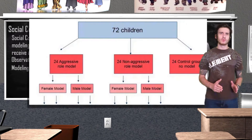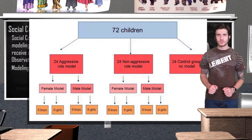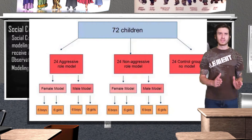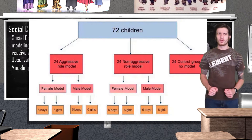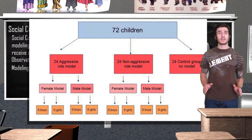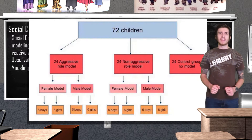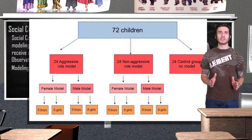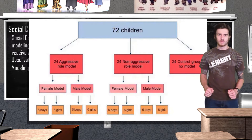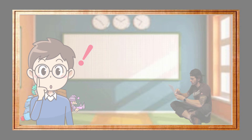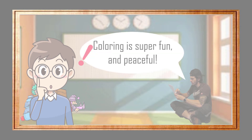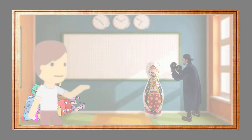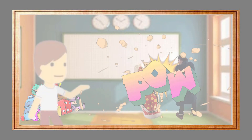The sample used for the study was 36 boys and 36 girls from the Stanford University Nursery School, all aged three to six. During the experiment, children were individually brought into a room with a bunch of toys. The kids could be part of one of three groups: 24 kids were used as a control group and were not provided with a model to observe; another 24 kids were exposed to a non-aggressive male or female model who played quietly in the corner of the room for about 10 minutes; and the last group of 24 kids was exposed to an aggressive male or female model who viciously assaulted Bobo the doll for 10 minutes.